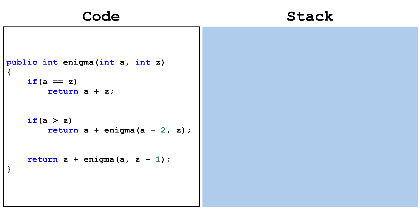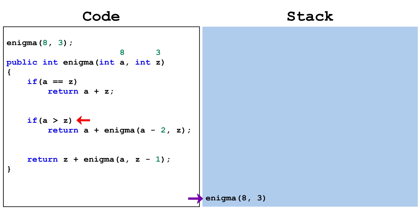Let's say a call was made to enigma that passes 8 and 3. 8 gets passed to the parameter a and 3 gets passed to the parameter z. A frame gets pushed onto the stack. a equals z is false, so we continue on. a greater than z is true, so this frame will return 6 plus whatever is returned by enigma(6, 3).